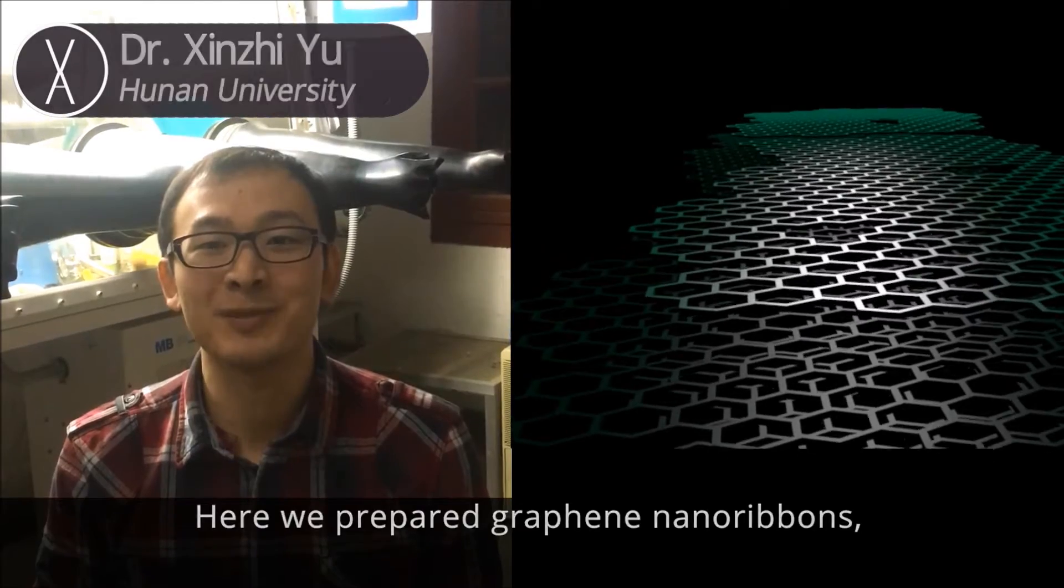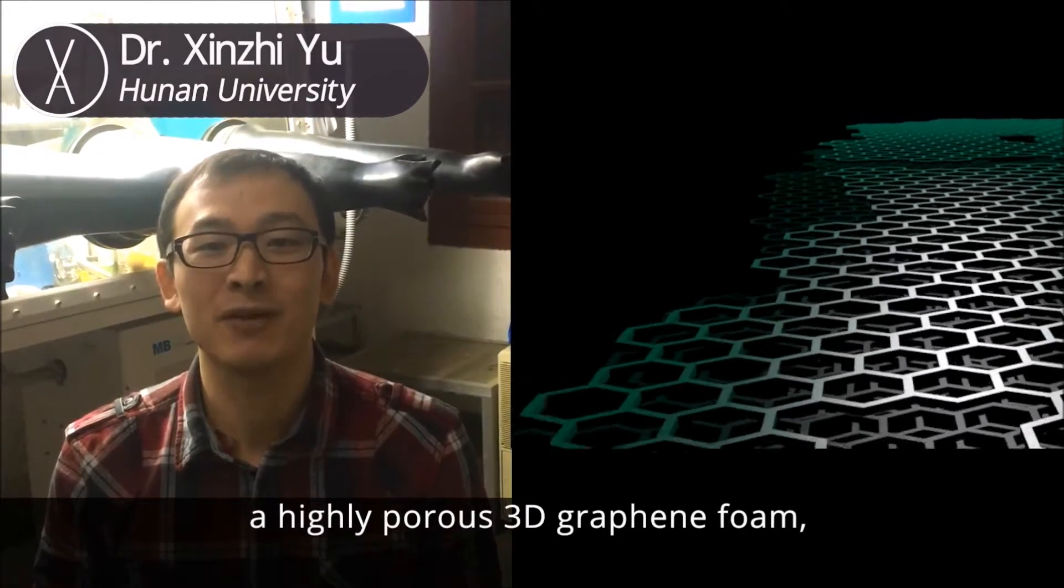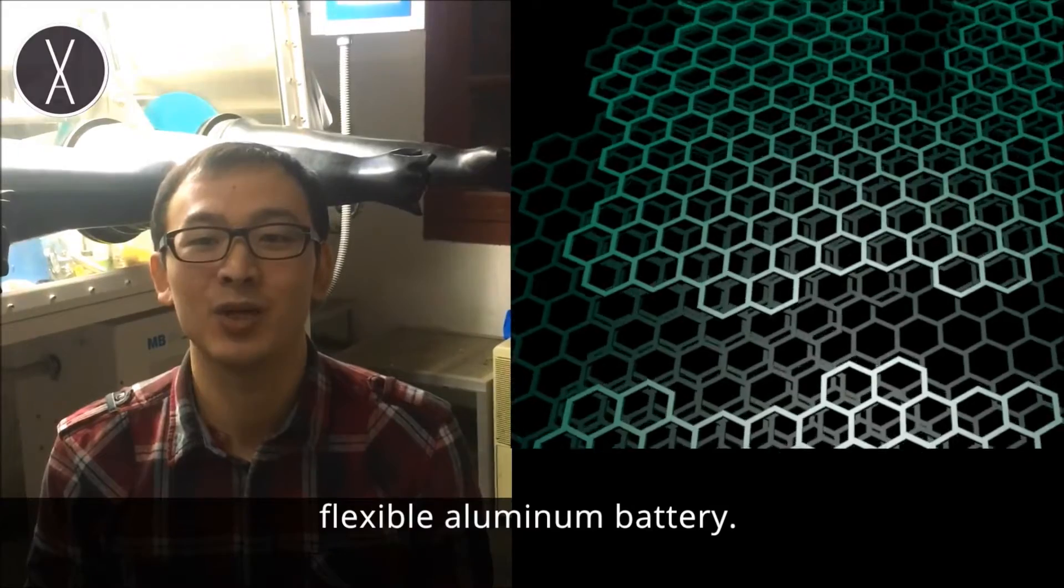Here, we prepared graphene nano-ribbons on highly porous 3D graphene foam as a binder-free cathode for flexible aluminum batteries.